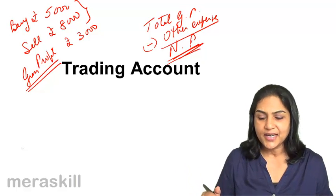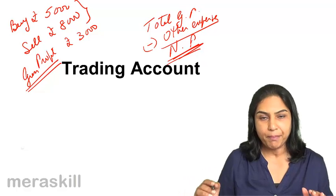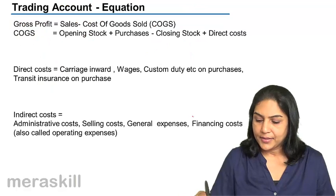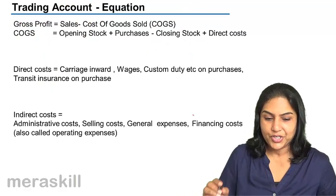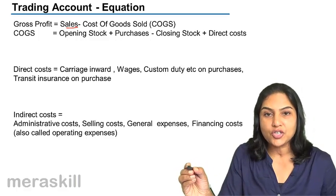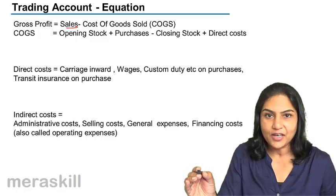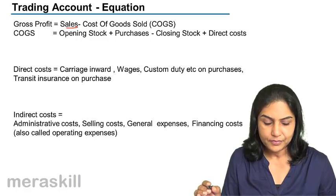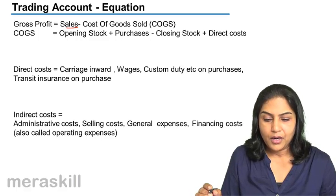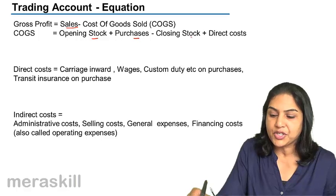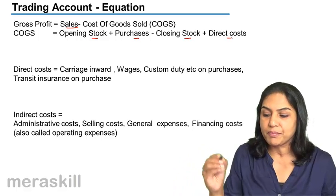So, let us understand how we prepare a trading account, how we compute a gross profit — whether by preparing a trading account or by forming an equation. Trading account equation: gross profit, as we discussed, is sales minus the cost of goods sold. In our example, that was 8,000 per phone minus 5,000 per phone.